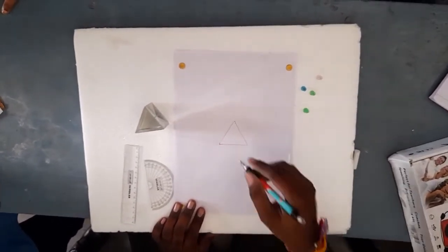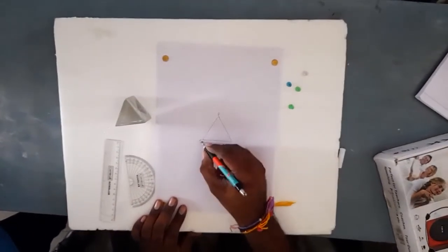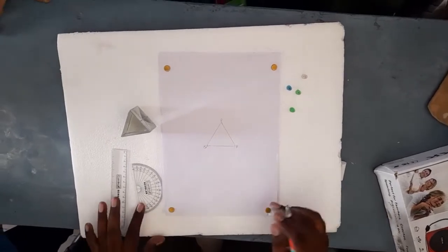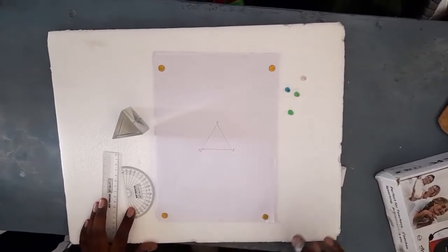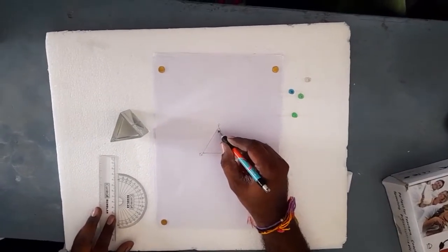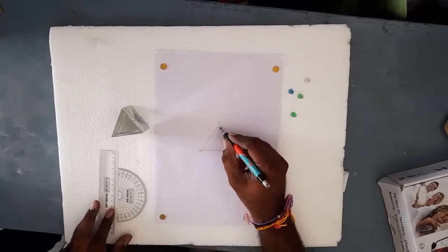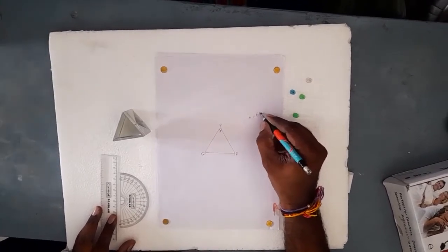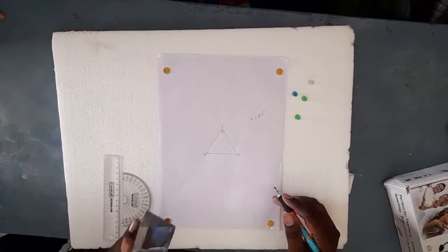When we get the outline of the prism, mark the vertices as P, Q, and R. We need to find the angle at the surface PQ and PR. The angle will be 60 degrees because it is an equilateral triangular prism.